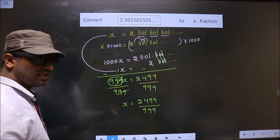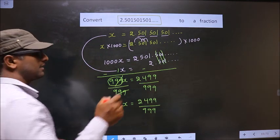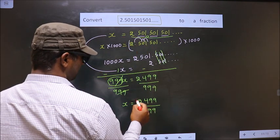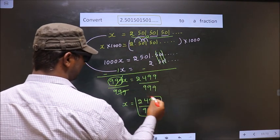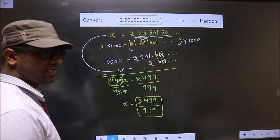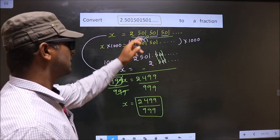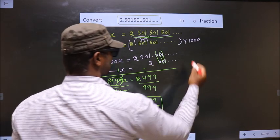Now earlier we had taken the recurring decimal equal to x. Now we got the fraction equal to x. That implies only one thing: that is, this recurring decimal equals this fraction.